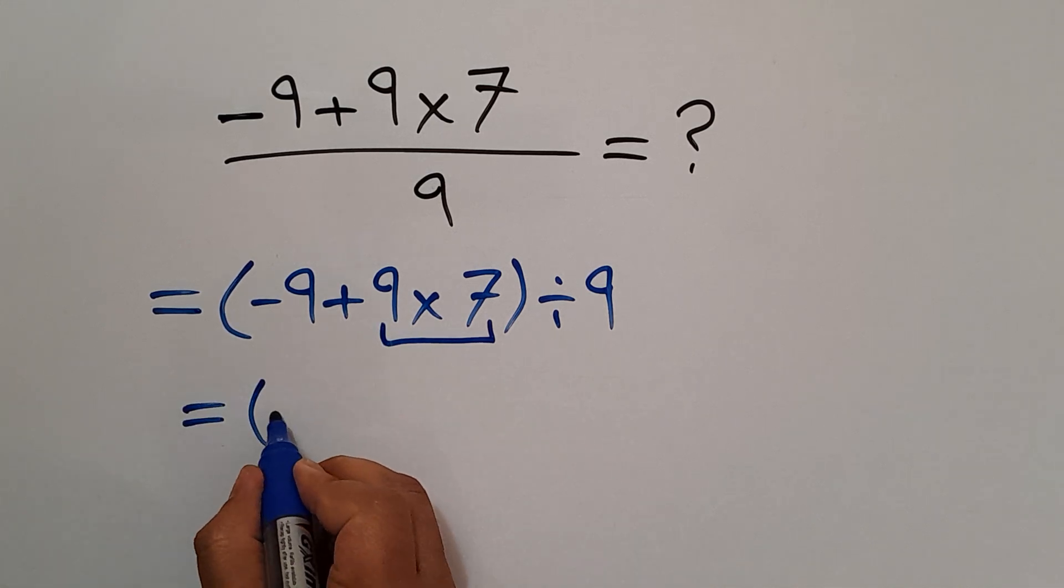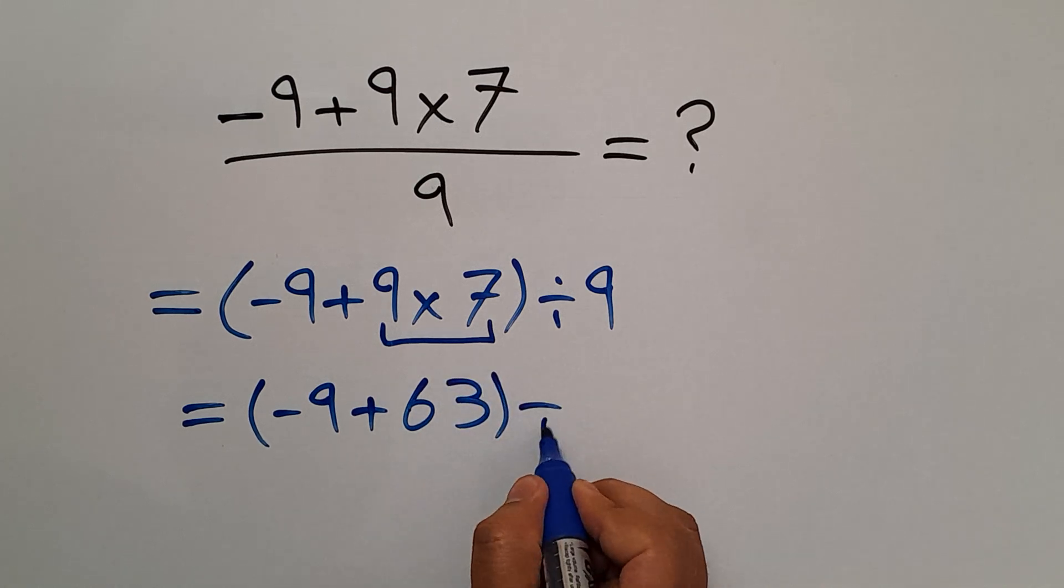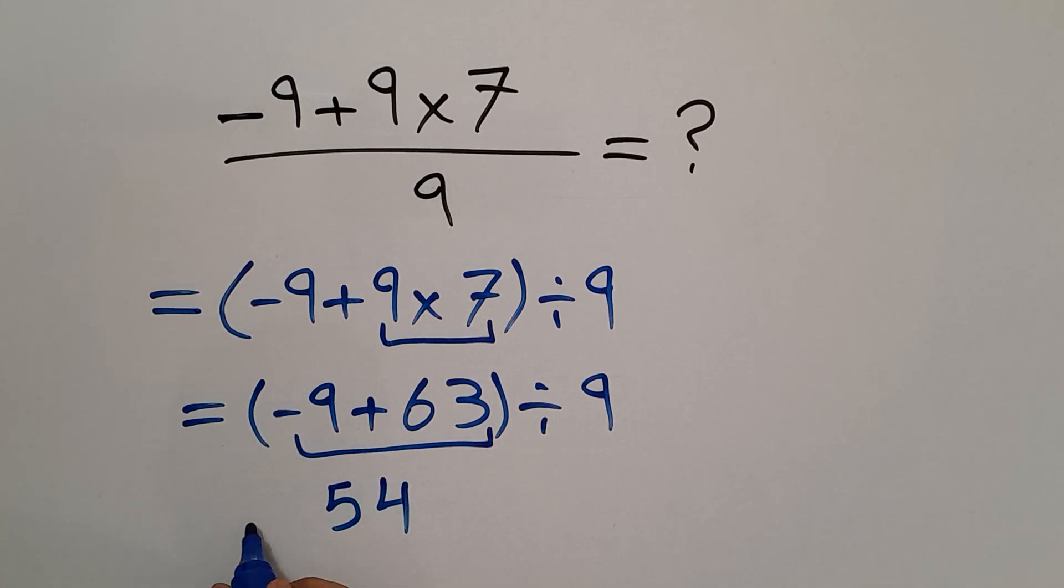So we have parentheses negative 9 plus 63 divided by 9. And negative 9 plus 63 equals 54. So we have 54 divided by 9.